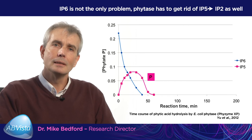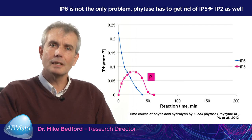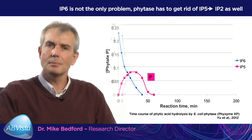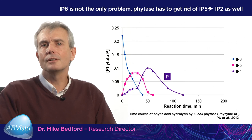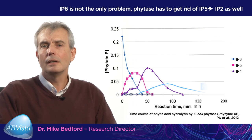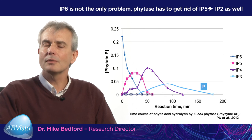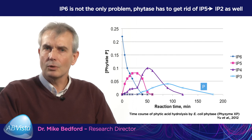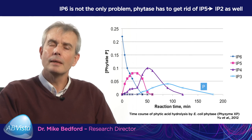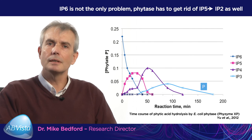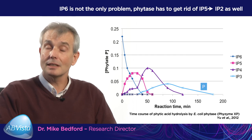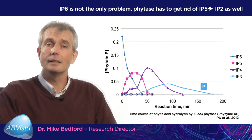That's a key point. Phytase does not have a similar appetite for IP6 as it does for IP5, IP4, IP3 and IP2. You can see the IP4 and IP3 concentrations rise as IP5 is broken into IP4, and IP4 is broken down into IP3. But the rate at which the enzyme is attacking IP4 and IP3 is quite slow, particularly for IP3. That means you see a buildup of IP4 and IP3 when we use the phytase in the animal, and that's actually just been shown recently in in vivo experiments.